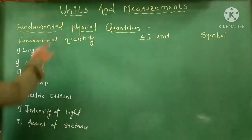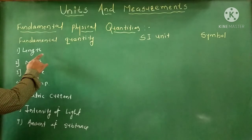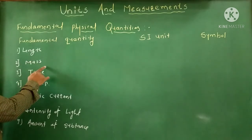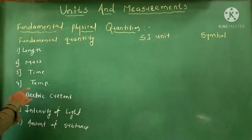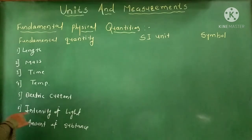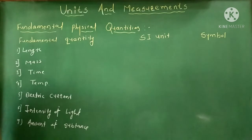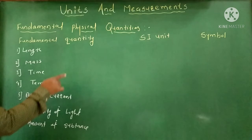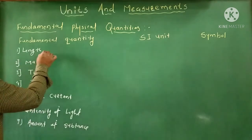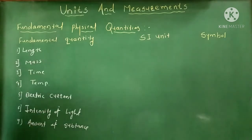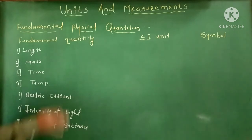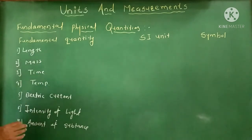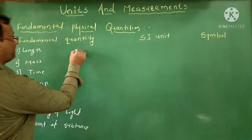Here we get the seven fundamental quantities: length, mass, time, temperature, electric current, intensity of light, and amount of substance. Now, the SI units of these physical quantities are as follows.